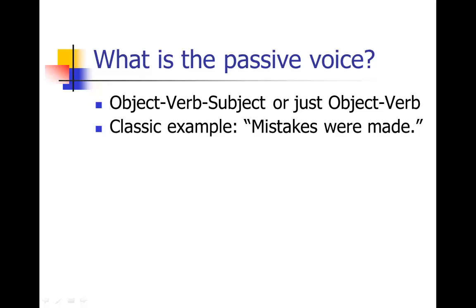The classic example of the passive voice is the sentence: "Mistakes were made." Notice that's in the passive voice because the object — what was made — is the mistake, so the object starts that sentence. Then we get the passive verb "were made," and there's no subject. We don't know who made the mistakes; they just kind of fell out of thin air. Nobody's responsible. So the passive voice is a way of talking that abdicates your responsibility, and that's one of the reasons it exists in the English language.